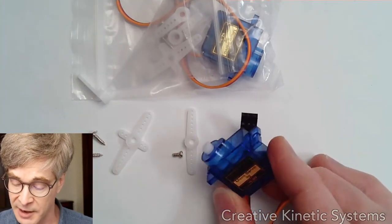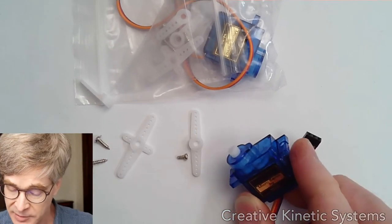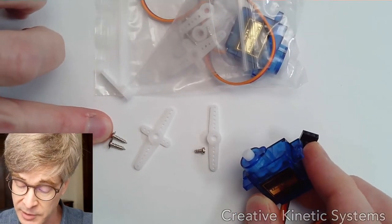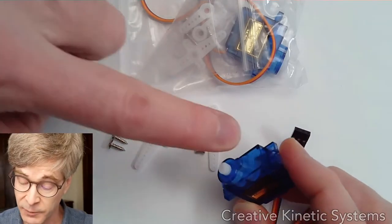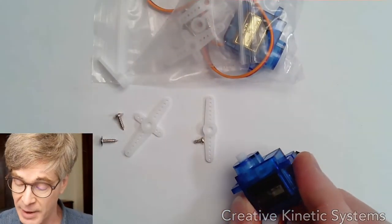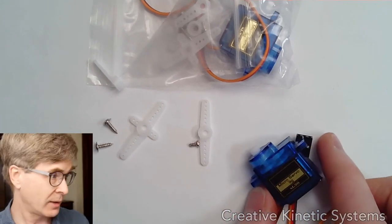But what about the body of the servo itself? The best way to mount these is to use the tabs. There's two small, sharp-tipped wood-cutting screws or self-tapping screws that are included, which can fit into the small holes in the tabs. The tabs are really the best bet for mounting into a structure. Let's take a look at what that might look like.